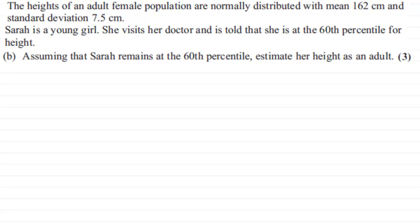Now what we need to do is to define the random variable X. I'm going to define it as, let X be the random variable height in centimeters where X is distributed normally with a mean of 162 and a variance of 7.5 squared.